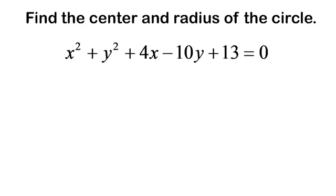Find the center and radius of the circle. I have the equation x squared plus y squared plus 4x minus 10y plus 13 equals 0. Do you notice we have an x squared and a y squared?